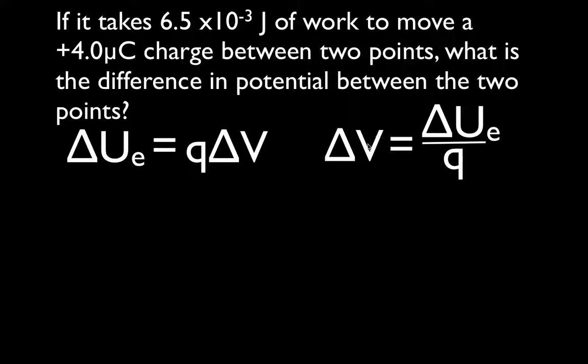That's kind of the definition of potential energy, joules per coulomb. Voltage, potential difference, change in potential is measured in joules per coulomb. So, this is the equation we're going to use.